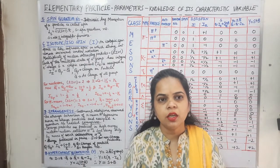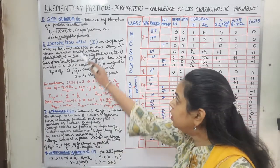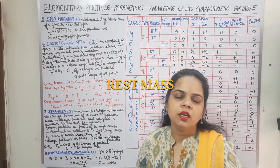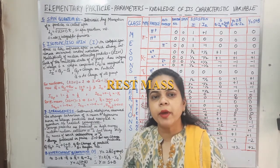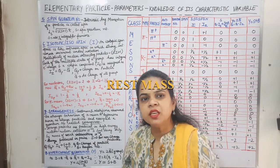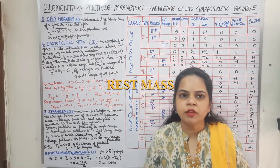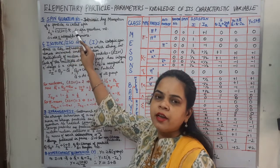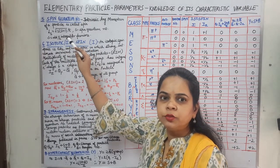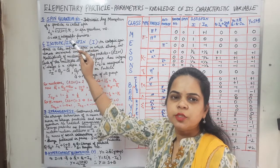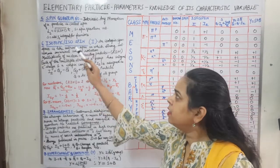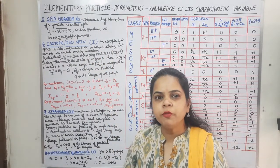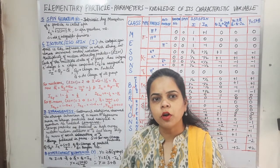The next parameter is the calculation of the spin, that is the spin quantum number. Spin is basically the intrinsic angular momentum that a particle possesses. The intrinsic angular momentum is given by the formula: square root of s(s+1) times h-cross. The s in this formula is the spin quantum number, which takes half-integral values for fermions and the value 0 for bosons.